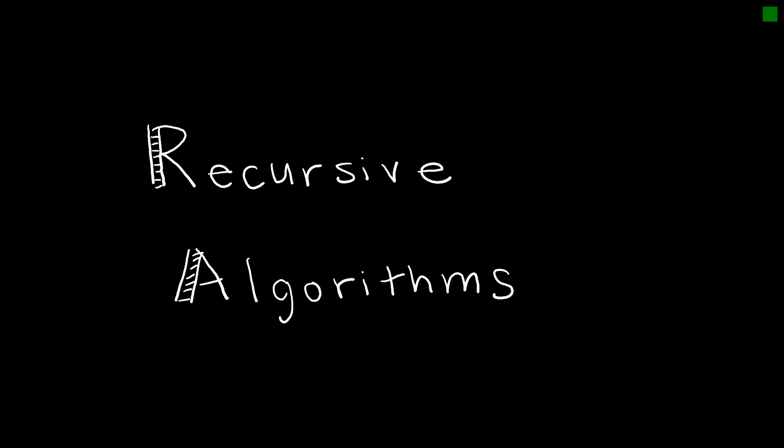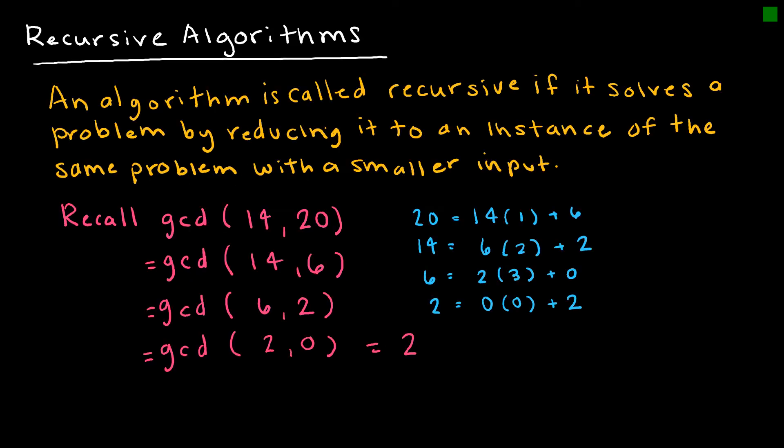Let's now take a look at recursive algorithms since we now know what a recursive definition is. So a recursive algorithm is basically an algorithm that solves a problem by reducing it to an instance of the same problem with a smaller input. So it just keeps doing that over and over.